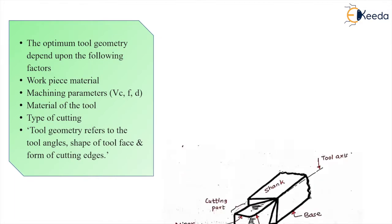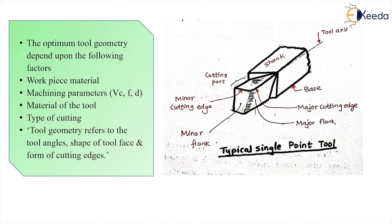I am going to show you a typical single point cutting tool. This is a single point cutting tool. This is the major cutting edge and this is the minor cutting edge. The area below the major cutting edge is the major flank, and the area below the minor cutting edge is the minor flank. This is the tool axis, this is the shank, and this is the base.